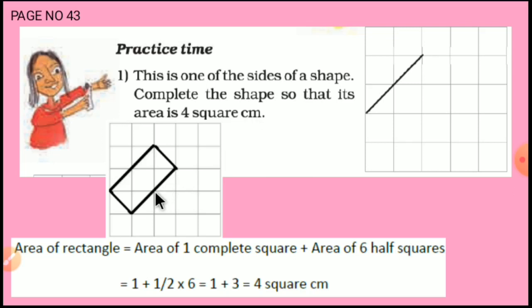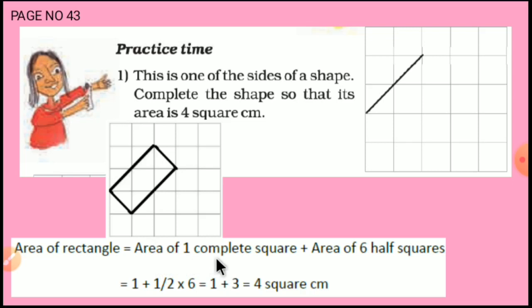Here is the answer. That is the line which was given to us and this line drawn by us. So you can see the area. Now let's calculate the area. The area of this rectangle is equal to area of 1 complete square plus area of 6 half squares.